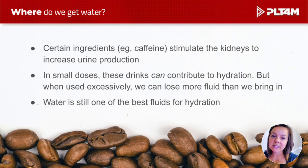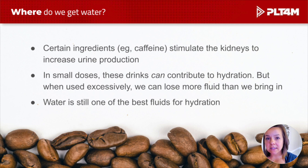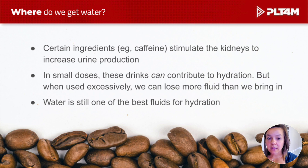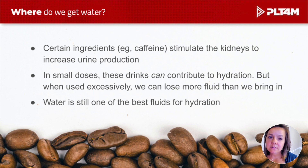There is a little bit of fine print: certain chemicals, when consumed in high doses, are going to stimulate the kidneys to increase urine production. Chemicals such as caffeine — the higher the dose, the more fluid the body is ultimately going to lose, not to mention its impact on your nervous system. So if we exclusively rely on beverages that have a lot of caffeine, there is a chance that we might lose more fluid than what we're actually bringing in. But in small doses, they can count towards your fluid needs.